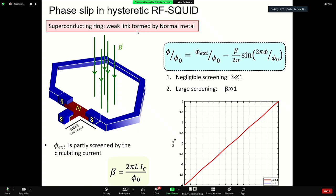If this loop has a weak screening parameter, the external flux that we apply and the flux that threads the loop has a somewhat linear relationship. If we increase this screening capacity of our loop, this relationship becomes a multi-valued function.